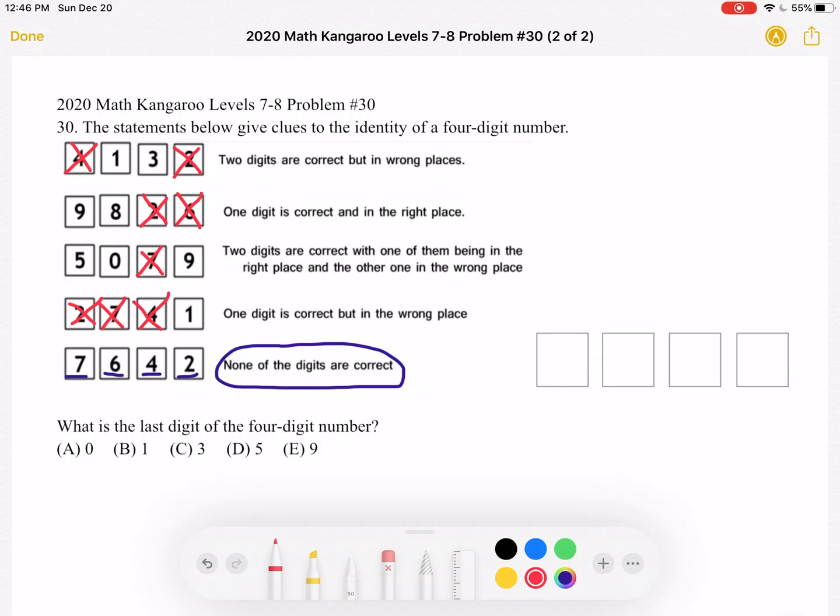So now when we look at the first statement, two digits are correct but in the wrong places, we know what those two correct digits are because there's only two left. They must be 1 and 3, but those digits are in the wrong place. Now let's look at this last statement. One digit is correct but in the wrong place. So because we crossed out the 2s, 7s, 6s, and 4s, we know that that one correct digit must be 1.